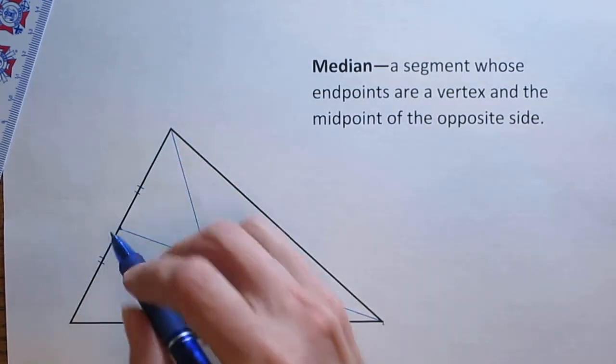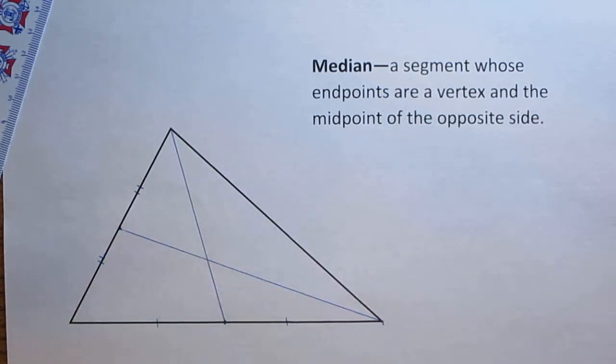And that, because it's a midpoint, is going to divide that side of the triangle into two congruent parts.